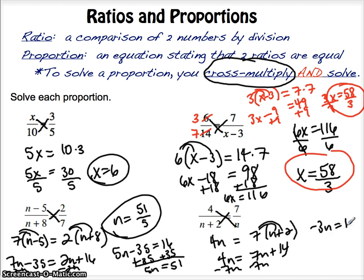And minus the 7n. So, negative 3n equals 14. Divide by negative 3. So, we'll just have n equals negative 14 thirds. And that's it. Okay? That's how you solve proportions.